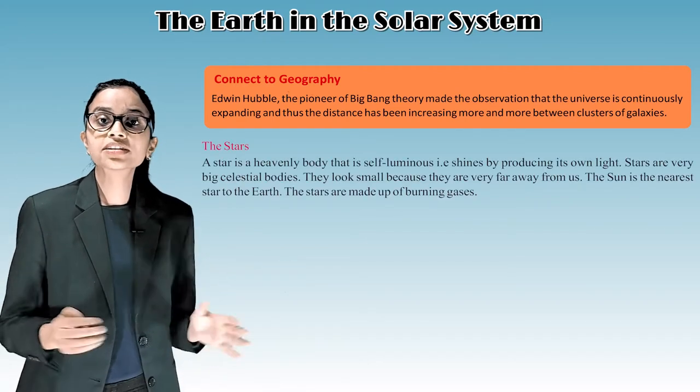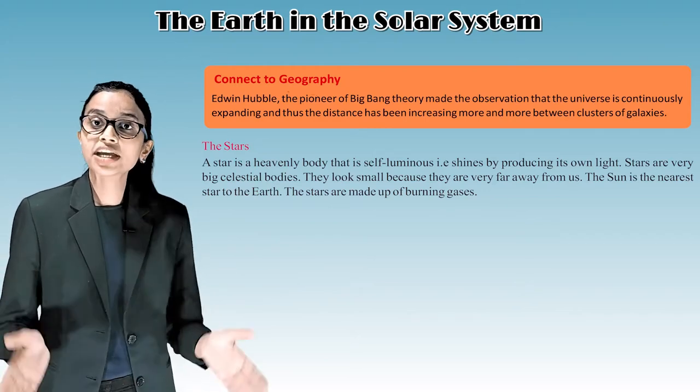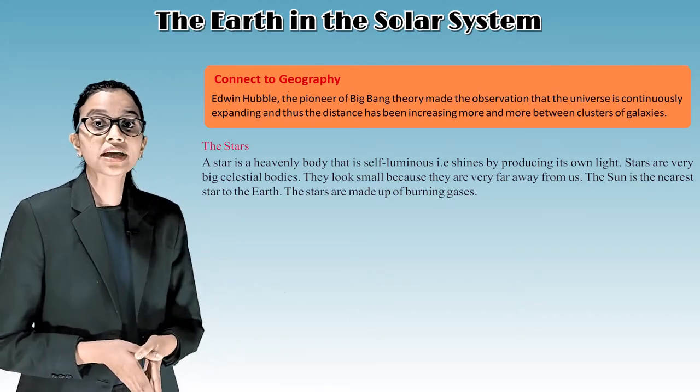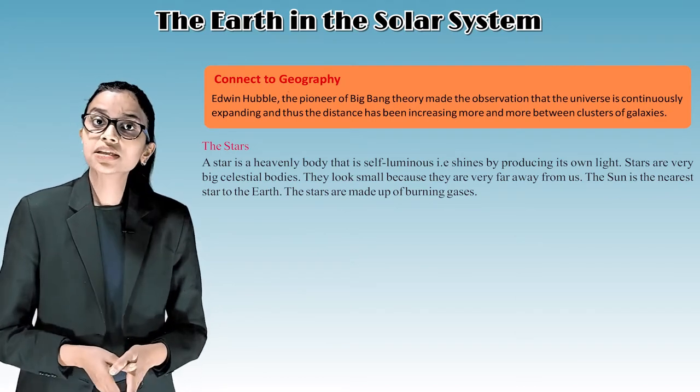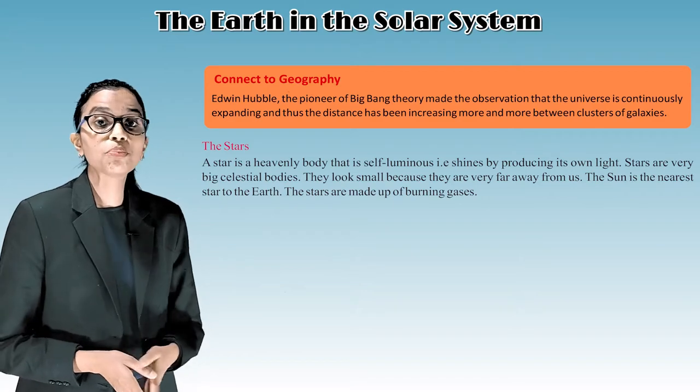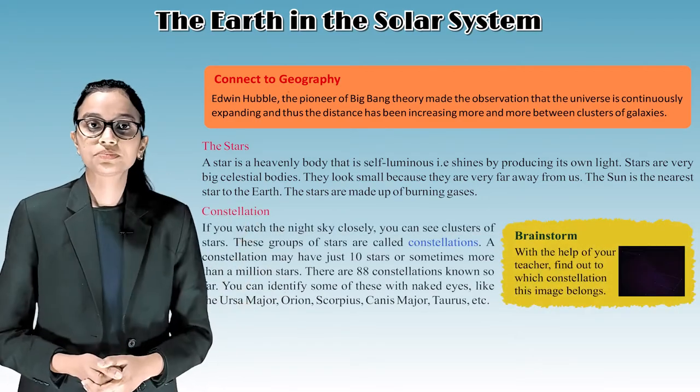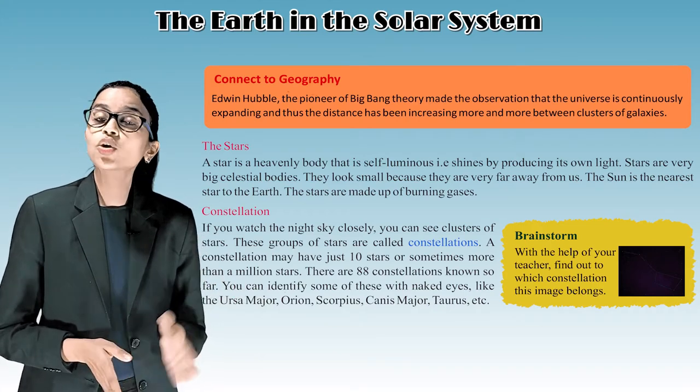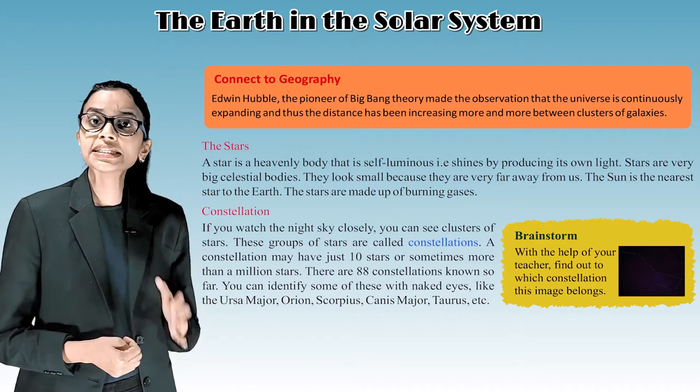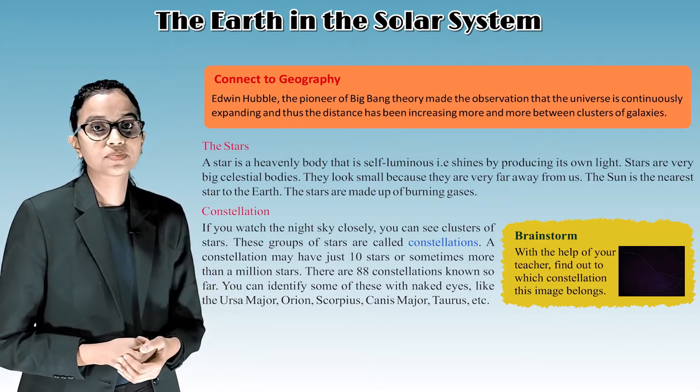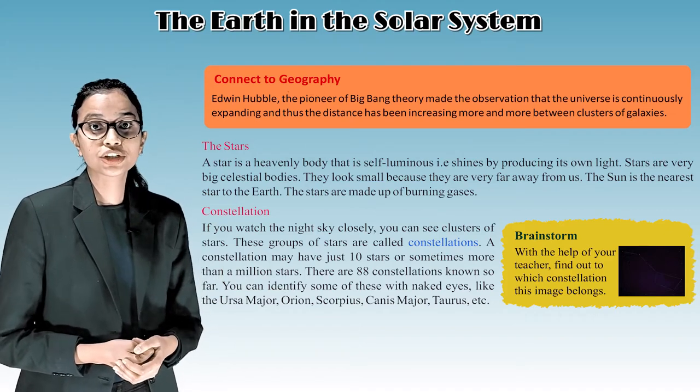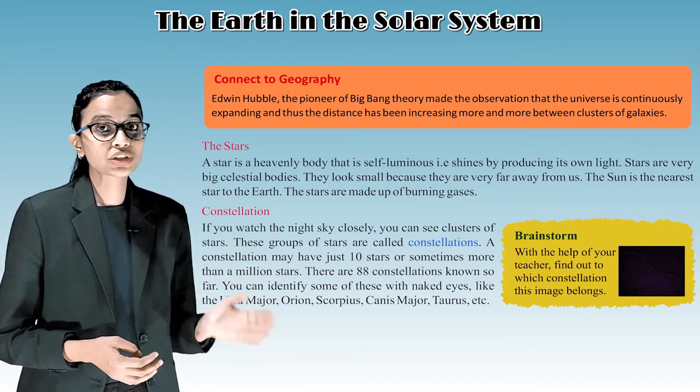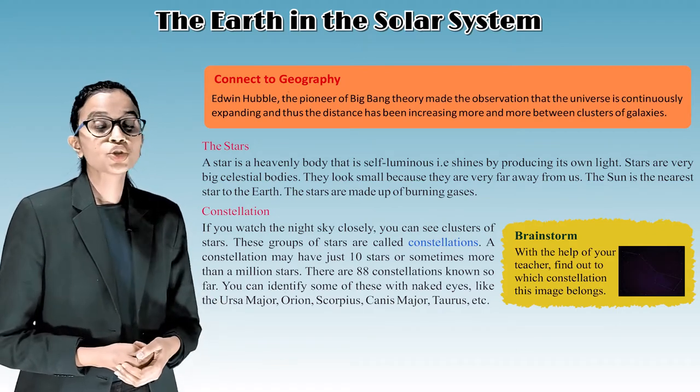The stars. A star is a heavenly body that is self-luminous, that shines by producing its own light. Stars are very big celestial bodies. They look small because they are very far away from us. The sun is the nearest star to the earth. The stars are made up of burning gases. Constellation. If you watch the night sky closely, you can see clusters of stars. These groups of stars are called constellations. A constellation may have just 10 stars or sometimes more than a billion stars. There are 88 constellations known so far. You can identify some of these with naked eyes like the Ursa Major, Orion, Scorpius, Canis Major, Taurus, etc.